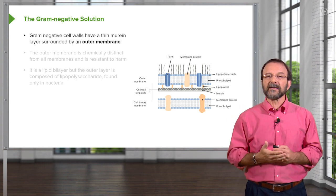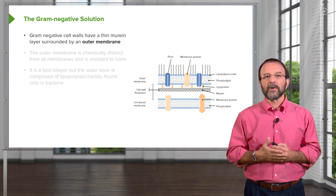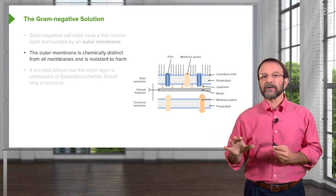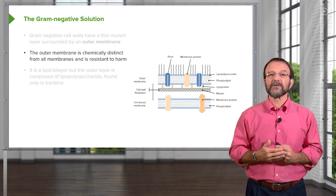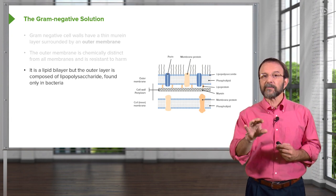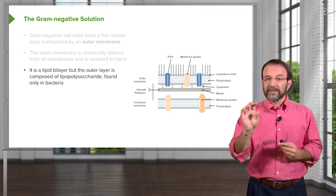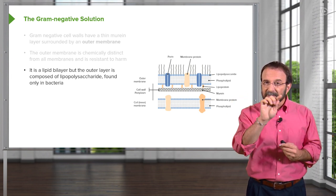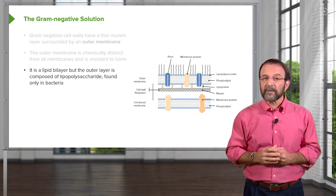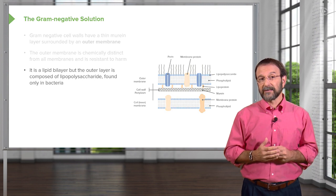The outer membrane is the unique feature of the gram-negative cell wall. It is chemically distinct from any membrane that we know about and is quite resistant to harm. It happens to be a lipid bilayer, very much like the inner membrane or the cell membrane, with the exception that the outer leaflet of that bilayer is made of what we call lipopolysaccharide — a compound only found in bacteria.